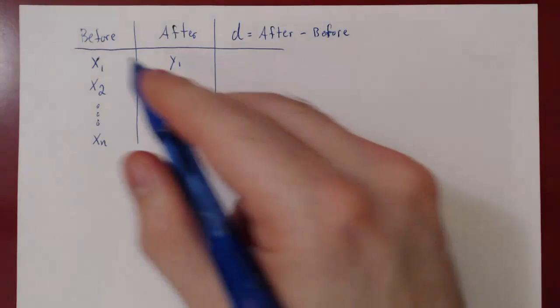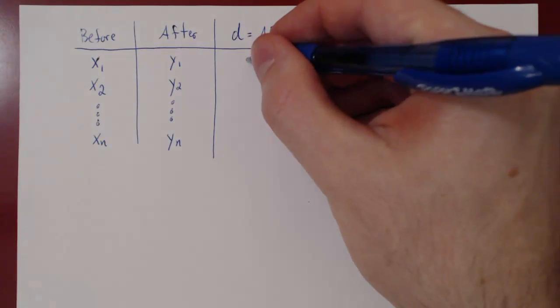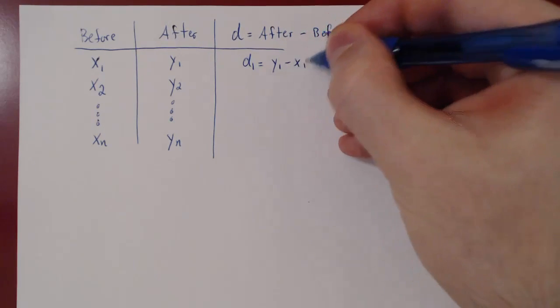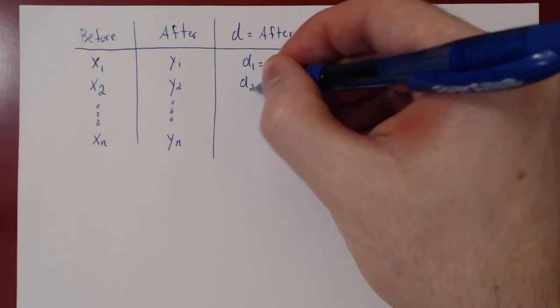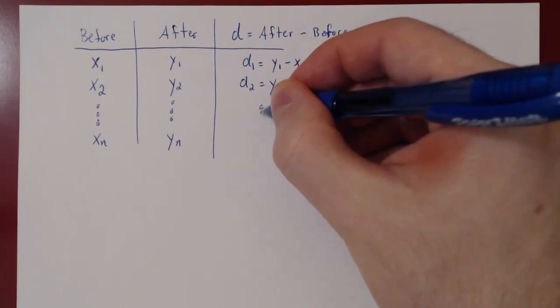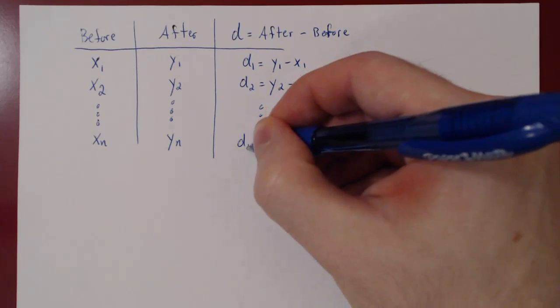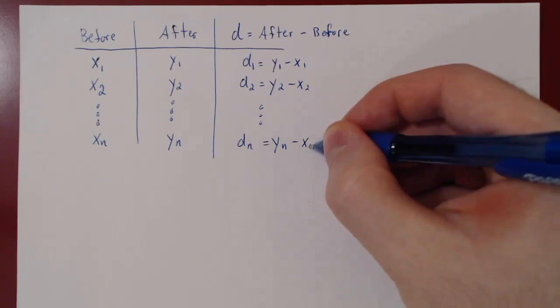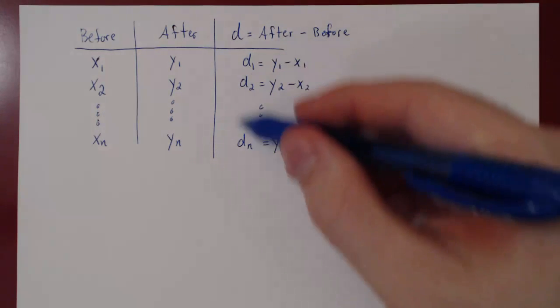So y1 minus x1 is our first difference, which we can call d1. The second difference, for person 2 is y2 minus x2. And finally, the nth person gives us the nth difference, yn minus xn. So now we have our n differences.